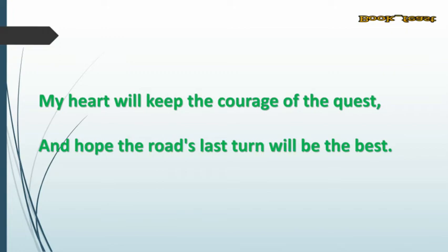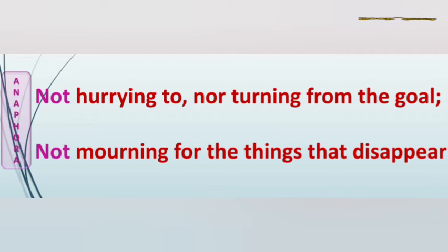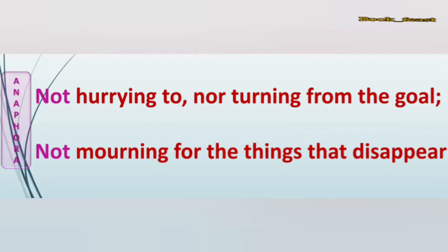Let's see the figures of speech in the poem. The lines 'not hurrying' and 'not moaning' are an example of anaphora. Anaphora is when the same word repeats at the start of consecutive lines, stressing the idea again and again. Here, the word 'not' — 'not hurrying,' 'not moaning' — is an anaphora.